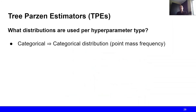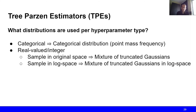Now the question is: what type of distributions does TPE use per hyperparameter type? If you have a categorical hyperparameter, such as a boolean flag for whether to use batch normalization or not, TPE uses a categorical distribution, also known as a point mass frequency. For real-valued or integer hyperparameters, TPE uses a mixture of Gaussians. When sampling in the original space, they use a mixture of truncated Gaussians, and if sampling in log space, they use a mixture of truncated Gaussians in log space.